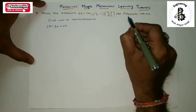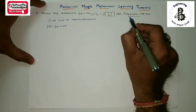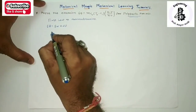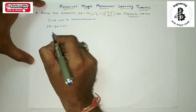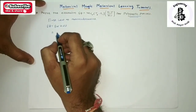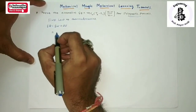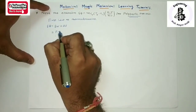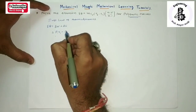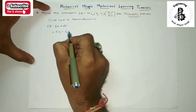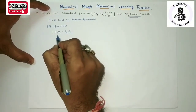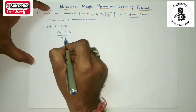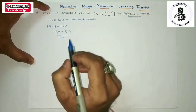Basically for the polytropic process, put the value of work done over here. For the polytropic process, work done equals p1v1 minus p2v2 divided by (n minus 1).